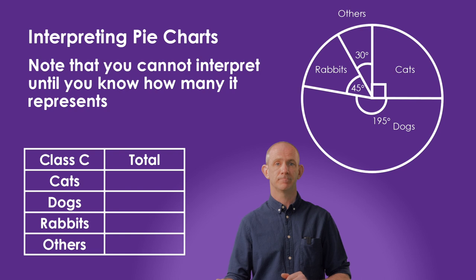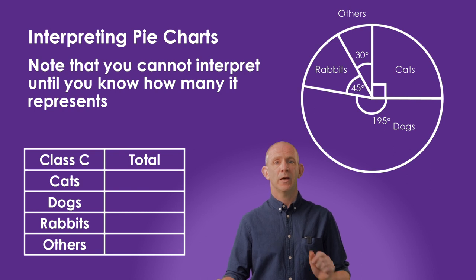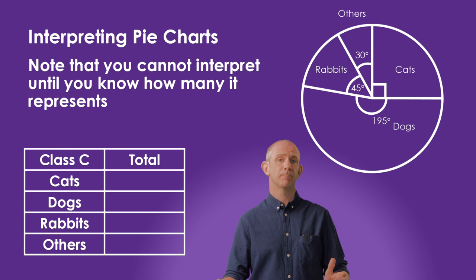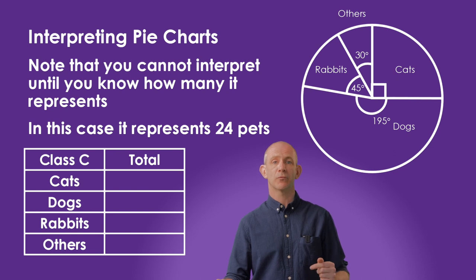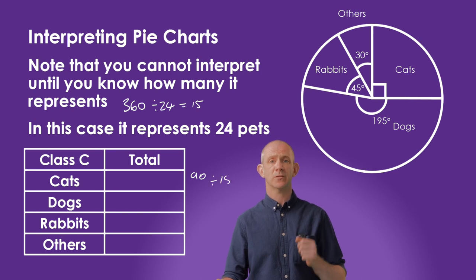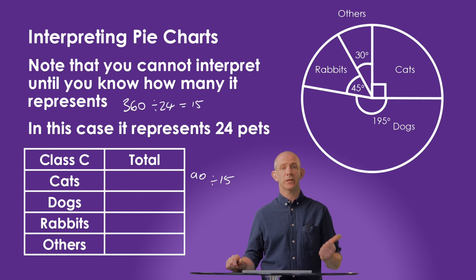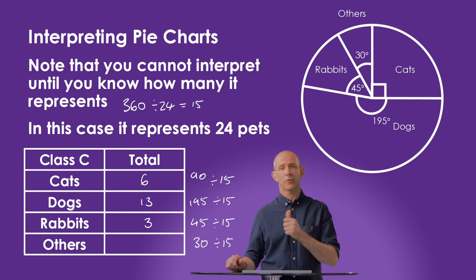Now let's look at how to interpret and gain information from a pie chart. If we don't have an amount for what the pie chart represents or what a particular sector represents, we cannot compare two pie charts — we wouldn't know whether it represents 12 pets or 120. In that case, simply state you can't compare due to insufficient information. Once we're told the pie chart represents 24 pets, we calculate 360÷24=15 degrees per pet. Then: 90÷15=6 cats, 195÷15=13 dogs, 45÷15=3 rabbits, and 30÷15=2 others.